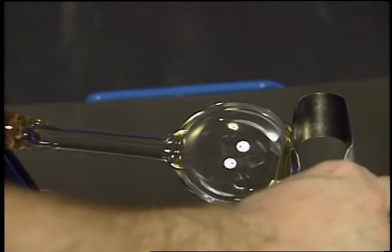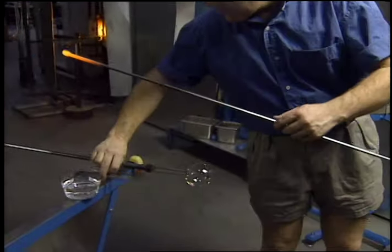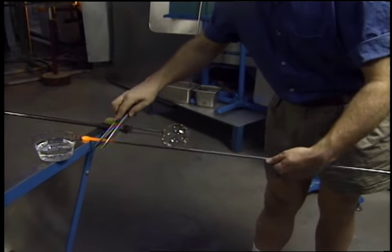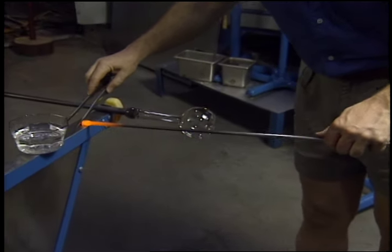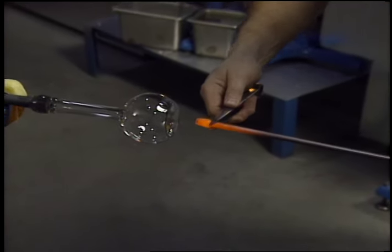The bottom is flattened. To shape the bottle's mouth, a glass-tipped metal rod, the pontal, is attached to the bottom of the vessel.